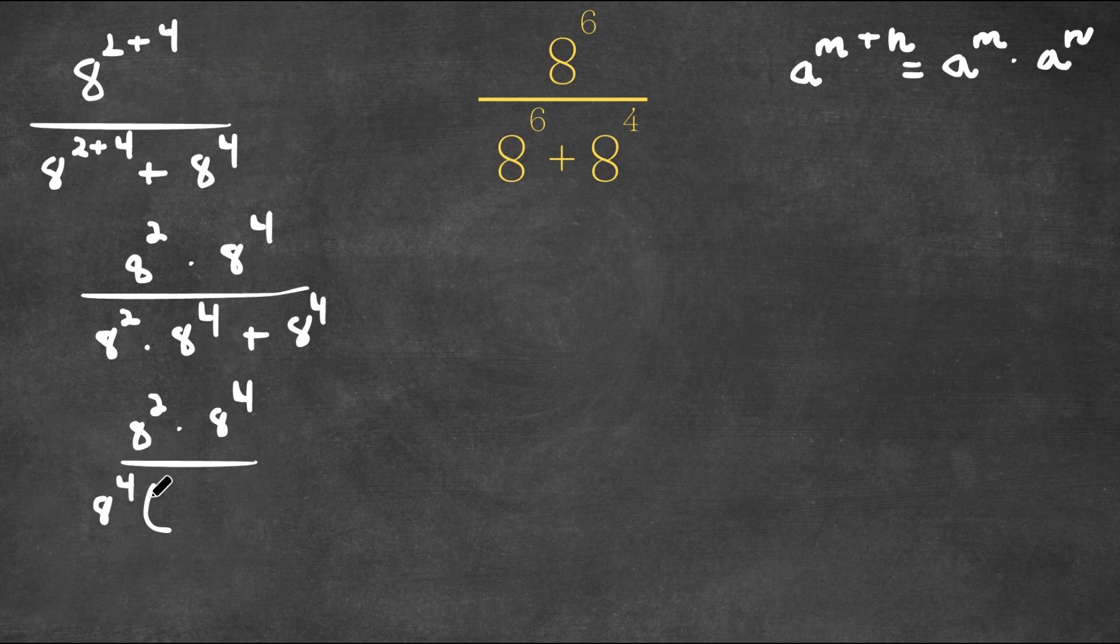8 to the power of 2 times 8 to the power of 4 divided by 8 to the power of 4 is simply just 8 to the power of 2 plus 8 to the power of 4 divided by 8 to the power of 4 is 1.